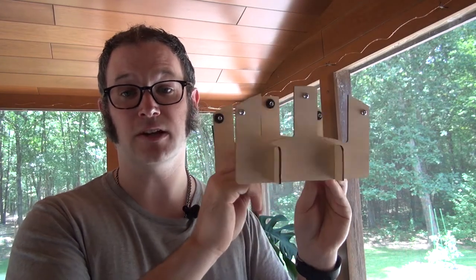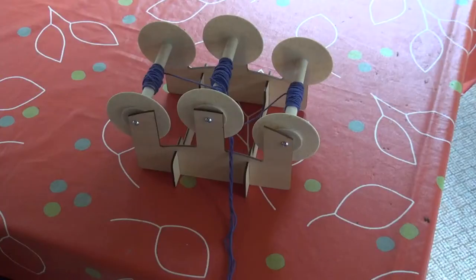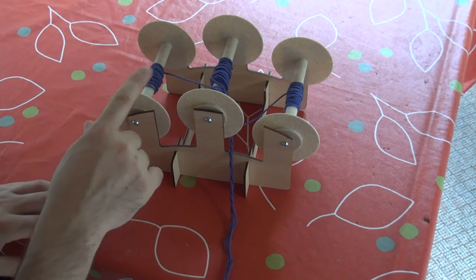This is the Lazy Kate for the Electric Eel Wheel bobbins. For those of you who aren't familiar with Lazy Kates,